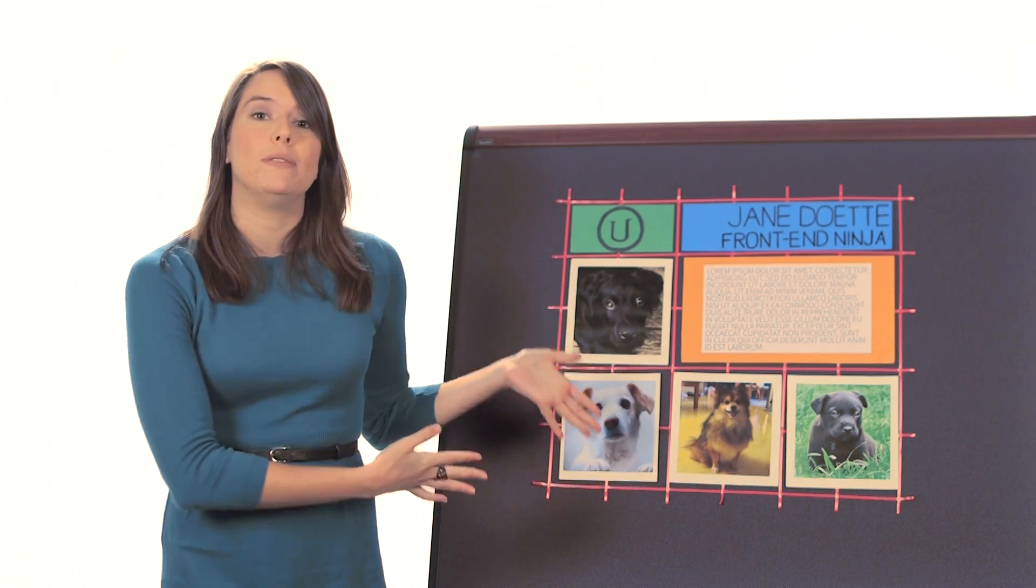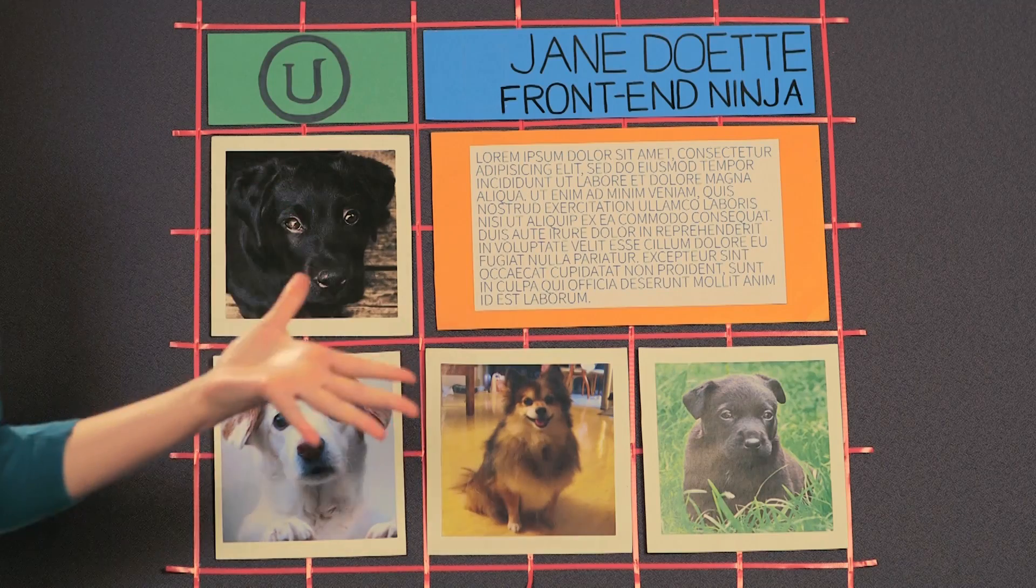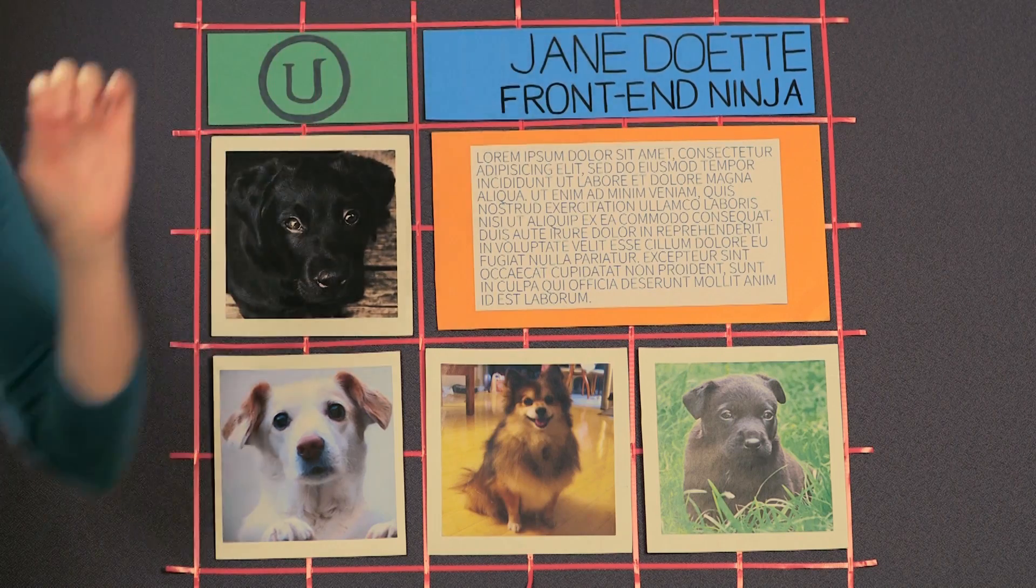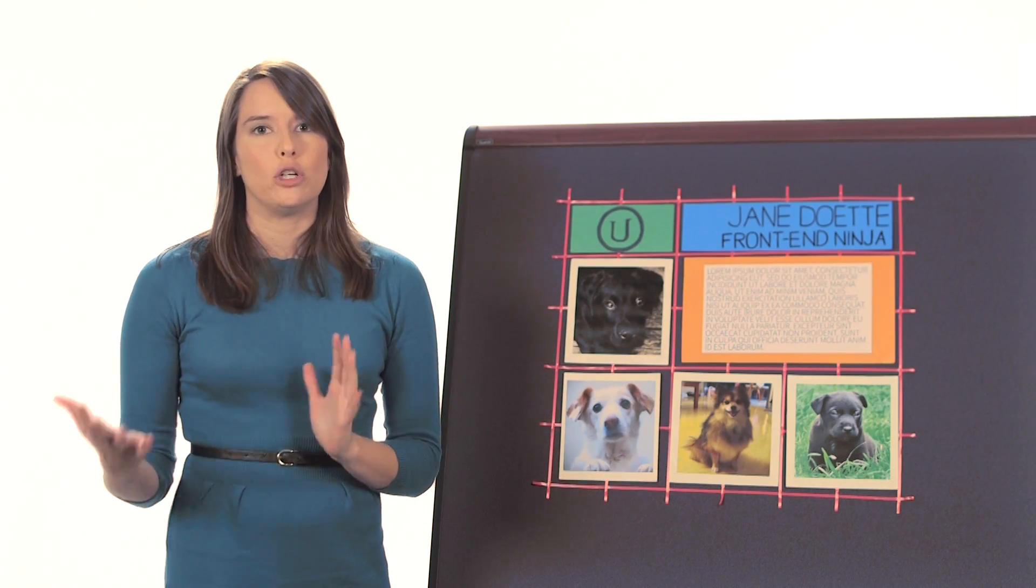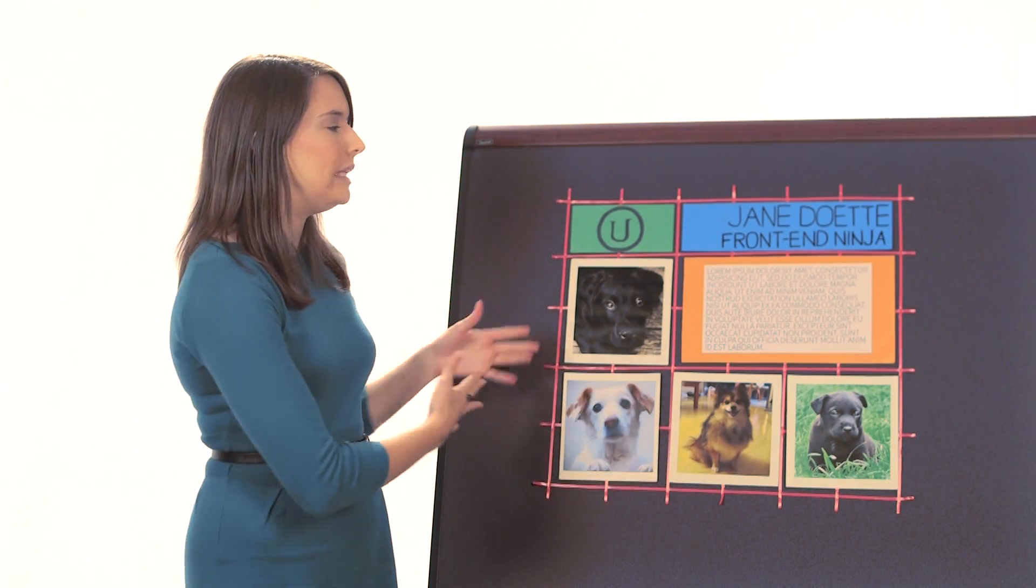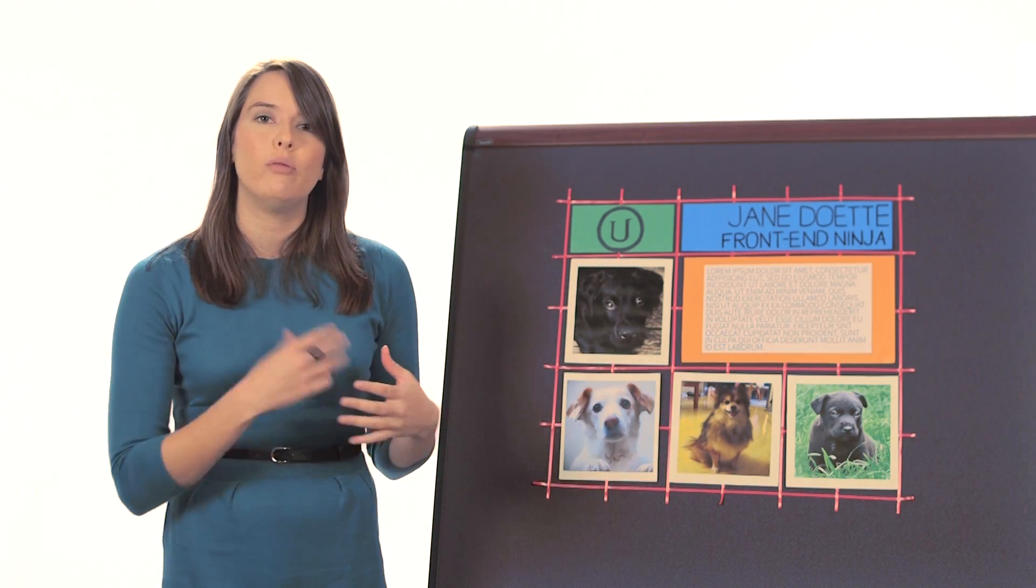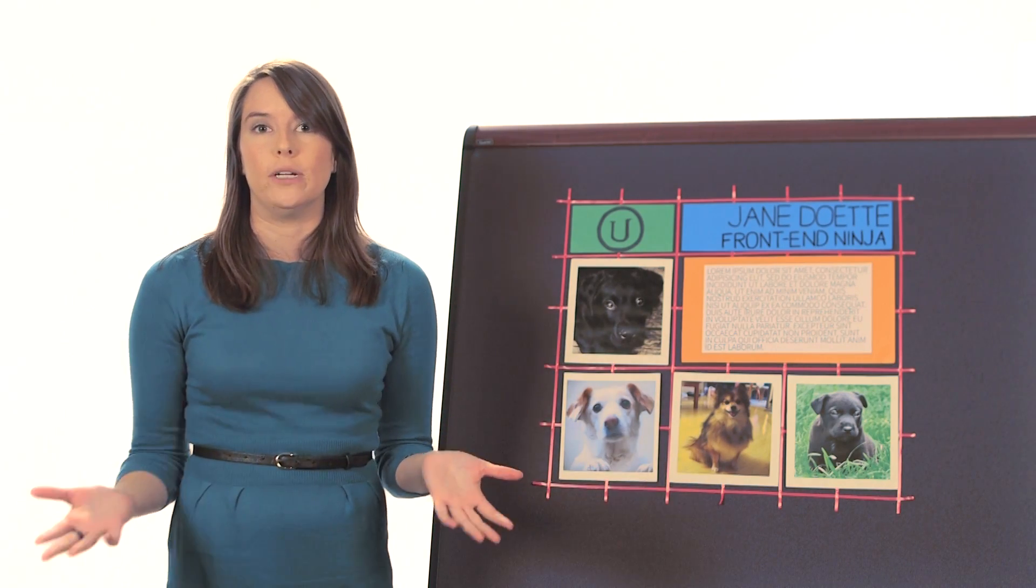Take an example website here. We have many different elements, images, text, a header. And by thinking of things in terms of boxes, we can actually easily rearrange things if we decide to give users a different experience.